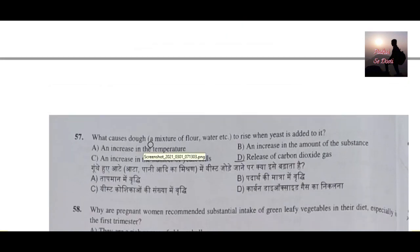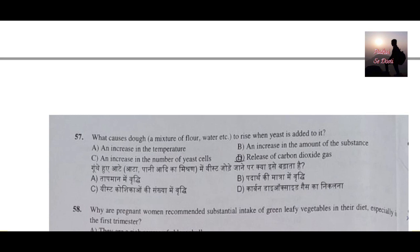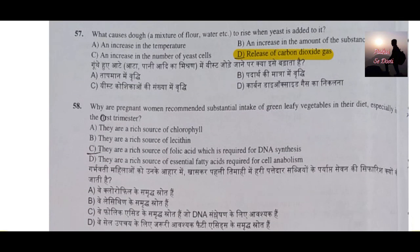Question number 57: What causes dough — a mixture of flour and water — to rise when yeast is added to it? In bakery products, wheat flour or maida mixed with water is used to make bread or pav, and they puff up. The reason is the release of carbon dioxide gas. When it is baked, carbon dioxide gas is released, causing the dough to swell. Option D is the correct answer.